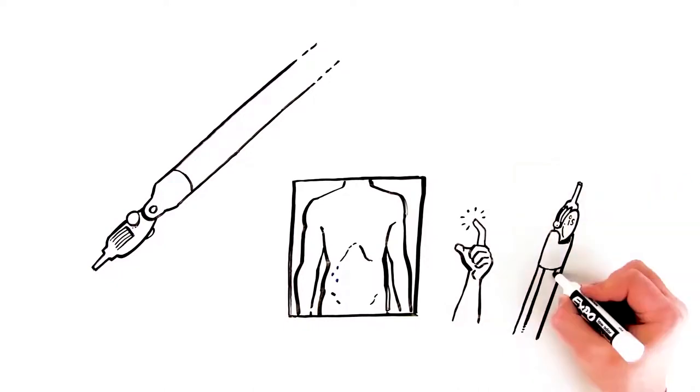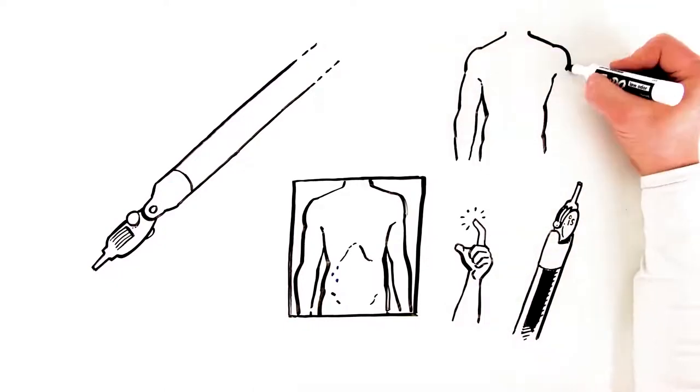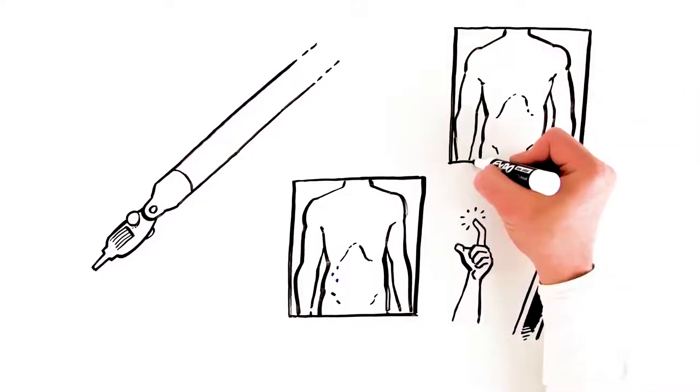With traditional open surgery, the surgeon must make a cut large enough to see the area and fit the surgical instruments.